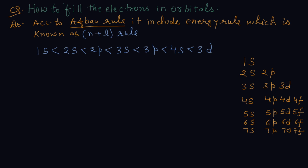The Aufbau rule includes the energy rule. Aufbau means building up, and electrons go to the orbital with less energy. Energy is calculated according to the n+l rule.